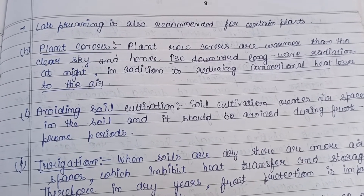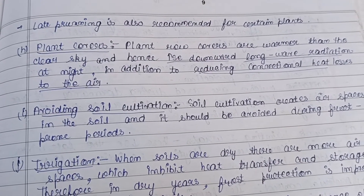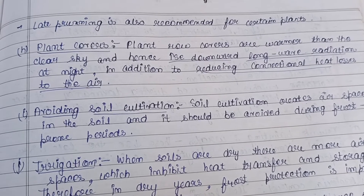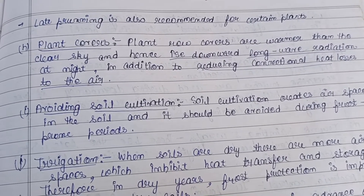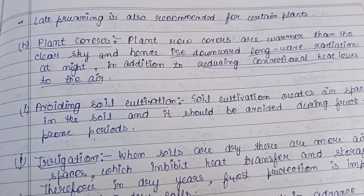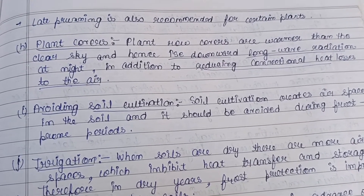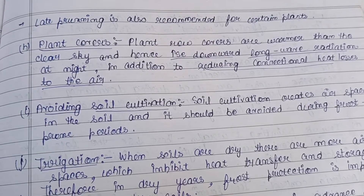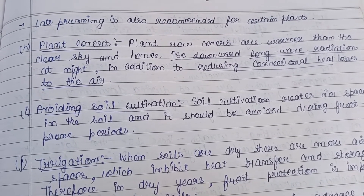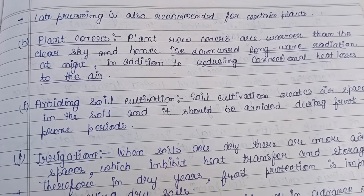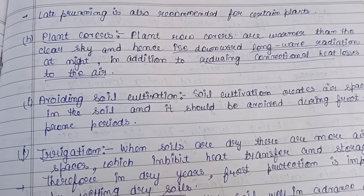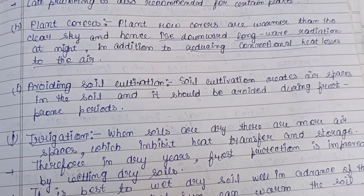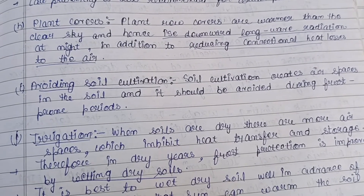Plant row covers are warmer than a clear sky and increase downward long-wave radiation, while also reducing convective heat losses to the air. This helps protect plants from frost.